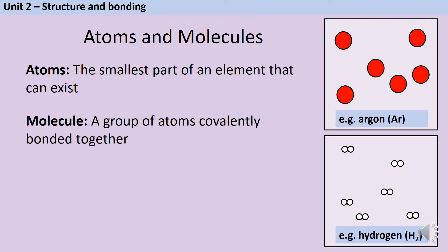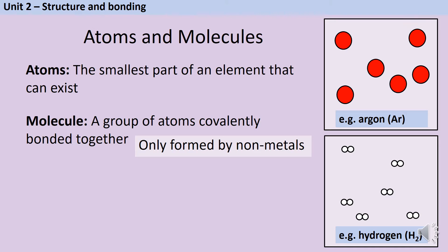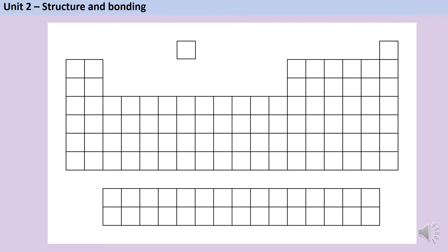We'll talk in a second about what a covalent bond is, but the crucial thing is that only non-metals form covalent bonds. So if you're looking at a substance that contains any metal atoms, then you shouldn't be describing it as molecular. In order to know whether a substance contains covalent bonds, we need to know whether the elements that make it up are metals or non-metals, because it's only non-metals that form covalent bonds.